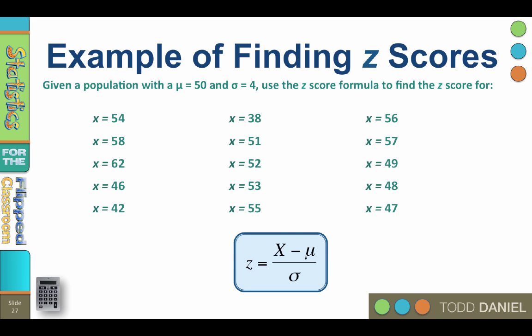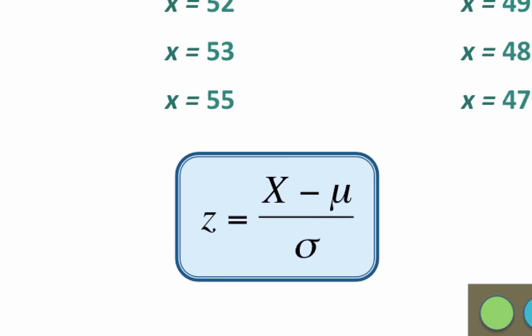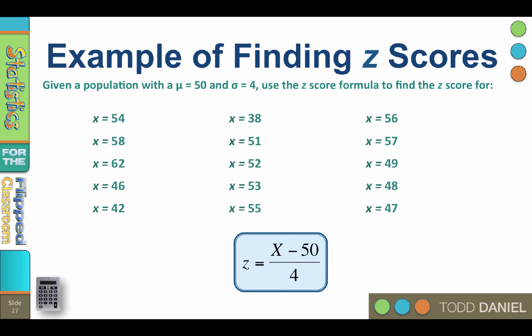Here you see the general z-score formula. Let's make this formula more useful by customizing it for this population. Good. Now we can plug in each x value to this formula and compute z. As we work through these examples, I want you to pay attention to the pattern.